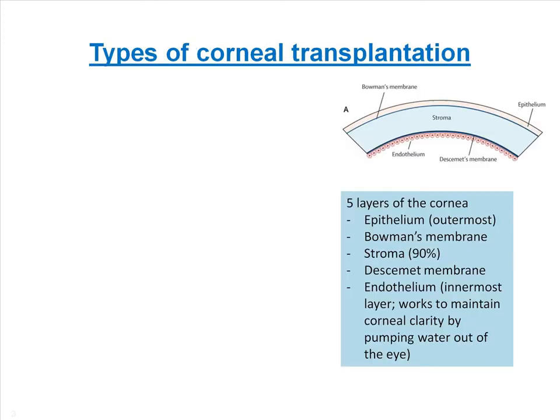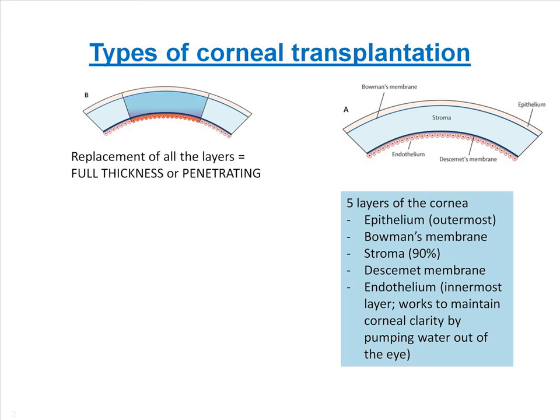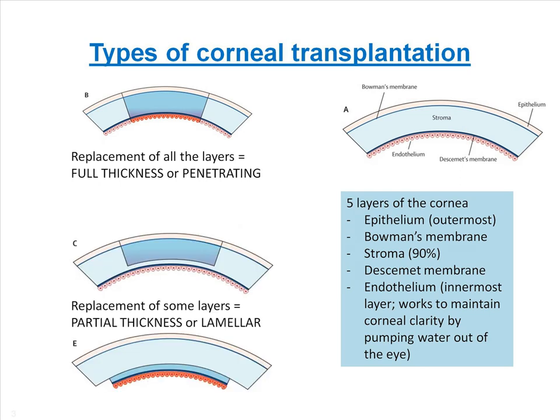The cornea consists of five layers. Simply speaking, corneal transplants can be thought of as full thickness, in which all five layers of the cornea are replaced — also known as penetrating keratoplasty — or partial thickness, in which some of the layers are replaced, also known as lamellar keratoplasty.